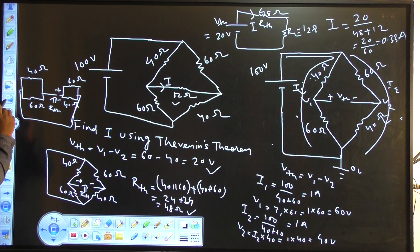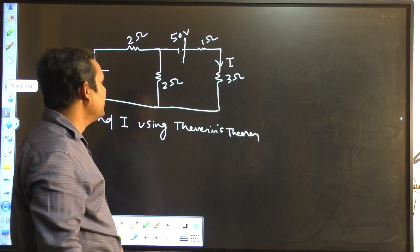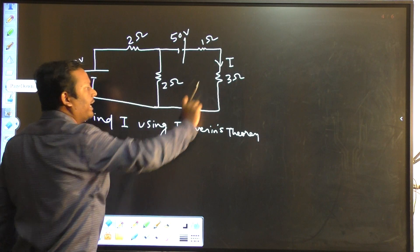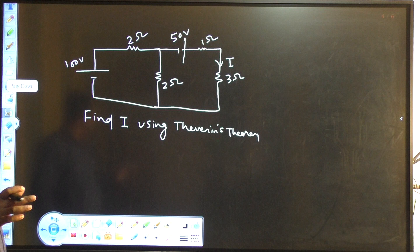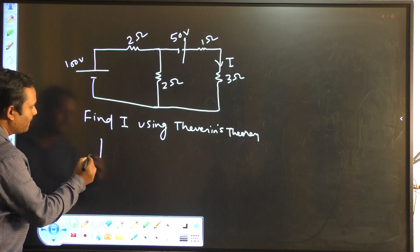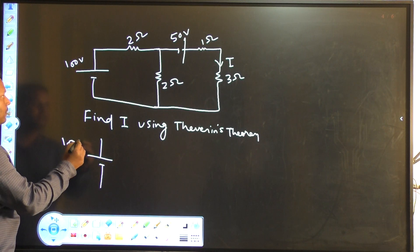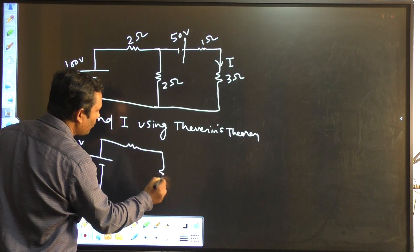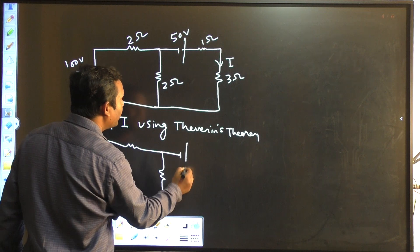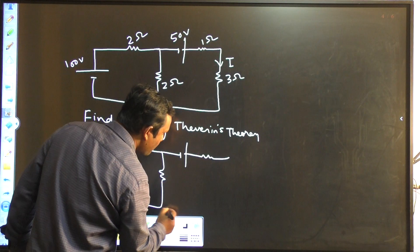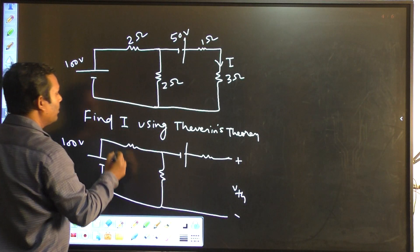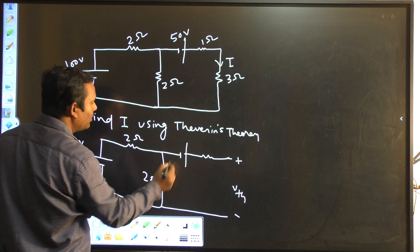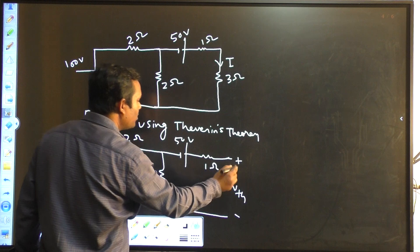In this question, it is also given to find I using Thevenin's theorem. So what I have to do: find I in this 3 ohm resistor. I have to open this 3 ohm resistor first and find the Vth. Then from this terminal, I have to see the Rth by replacing the voltage source by short circuit. Redrawing the circuit by open-circuiting the 3 ohm resistor — this will be 2 ohm, this is your Vth. So I have to find this Vth.